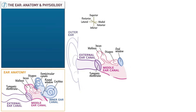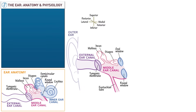Opposite to the oval window, draw the round window. Next show that the Eustachian tube extends from the middle ear into the nasopharynx, which allows your middle ears to equilibrate with the atmospheric pressure in your nasopharynx when you swallow.